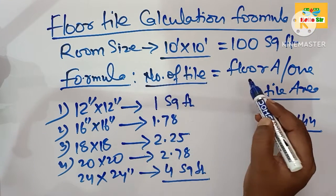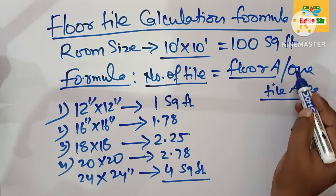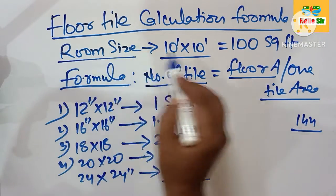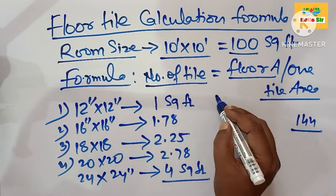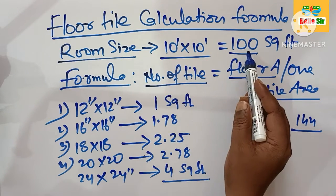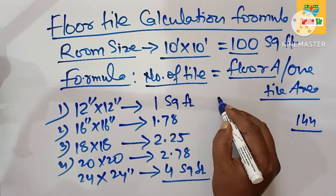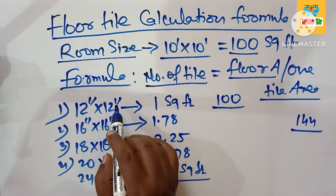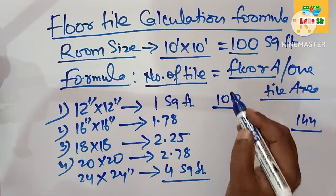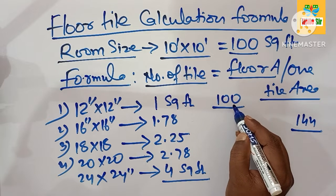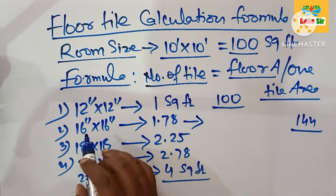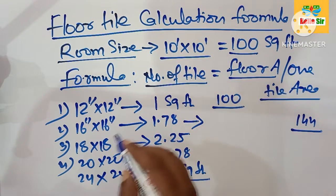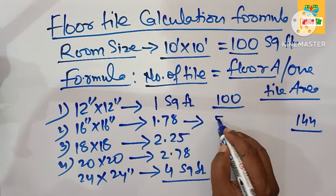The formula is: number of tiles = floor area divided by one tile area. If your flooring area is 100 square feet and you use 12x12 inch tiles (1 sq ft each), you divide 100 by 1, giving 100 tiles needed. If you use 16x16 inch tiles, divide 100 by 1.78, which gives 57 tiles.